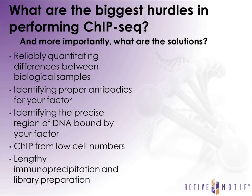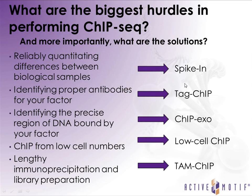ChIP has been around for quite a while, but there are several limitations with a standard ChIP assay. These include: the reliability of quantitating differences between ChIP-seq experiments across multiple samples; difficulty identifying a proper antibody for your factor of interest; identifying the precise region of DNA interacting with your protein; ChIP usually requiring large numbers of cells; and it can sometimes involve a very lengthy immunoprecipitation and library protocol.